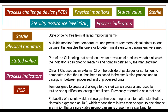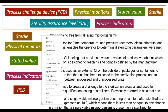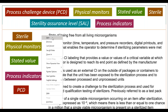Probability of a single viable microorganism occurring on an item after sterilization, normally expressed as 10 to the negative 6, meaning there is less than or equal to one chance in a million that a single viable organism is present on a sterilized item — and that's going to be our sterility assurance level.